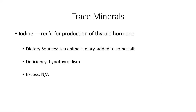Iodine is required for the production of thyroid hormone. We spent a good deal of time discussing thyroid hormone when we covered the endocrine system — it's basically your major metabolic hormone. Dietary sources include sea animals, dairy, and it's added to some salts. You can also buy non-iodized salt. If you have had your thyroid removed, you cannot process iodine properly and you don't need to eat iodized salt.